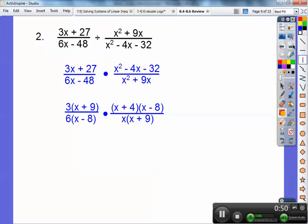I GCFed a 3 out of these two guys, a 6 out of these two guys. Factors of negative 32 that add to negative 4 are positive 4 times a negative 8. Then I pulled an x out of those two guys, and I canceled out the common factors, and I'm left with the lone x plus 4 factor over 2x on the bottom.